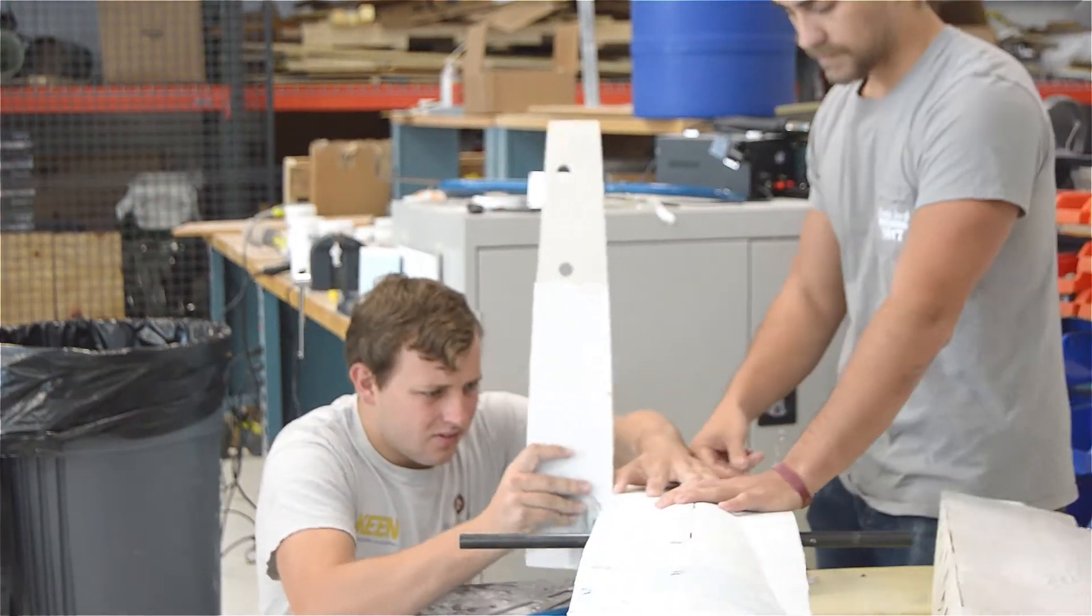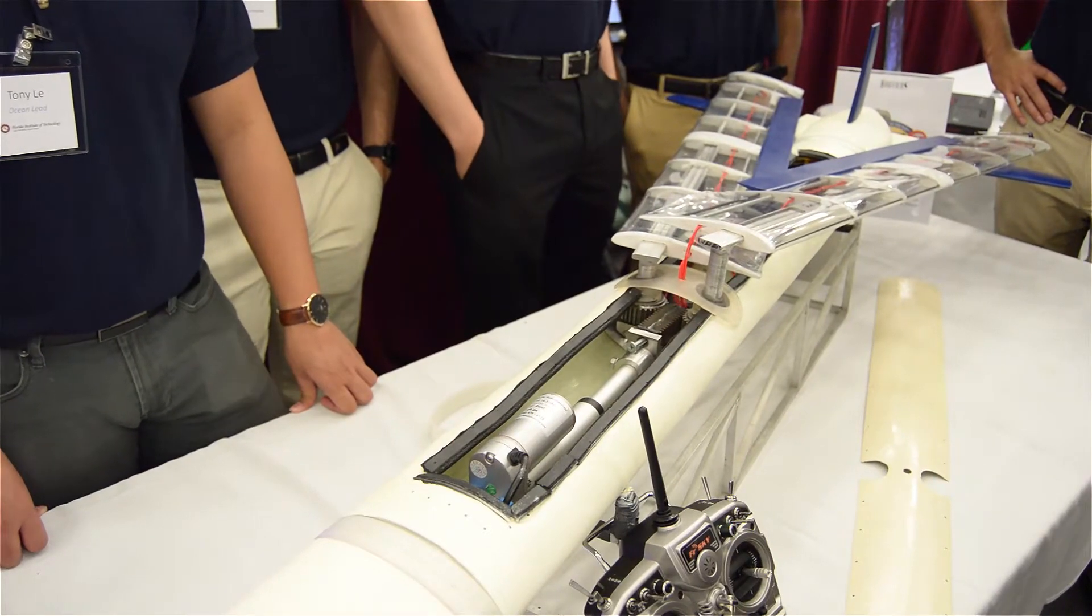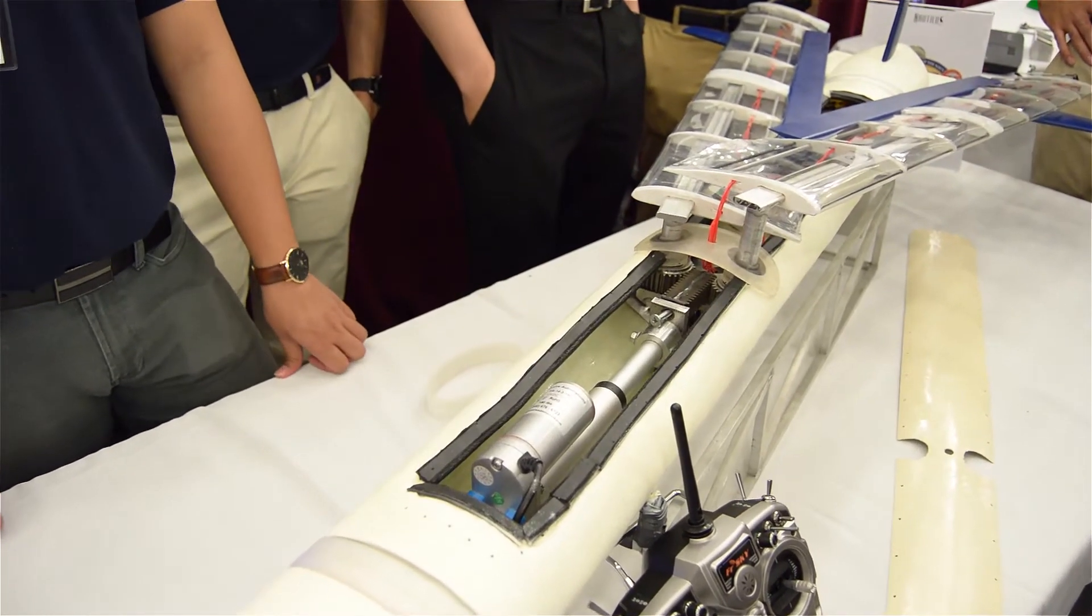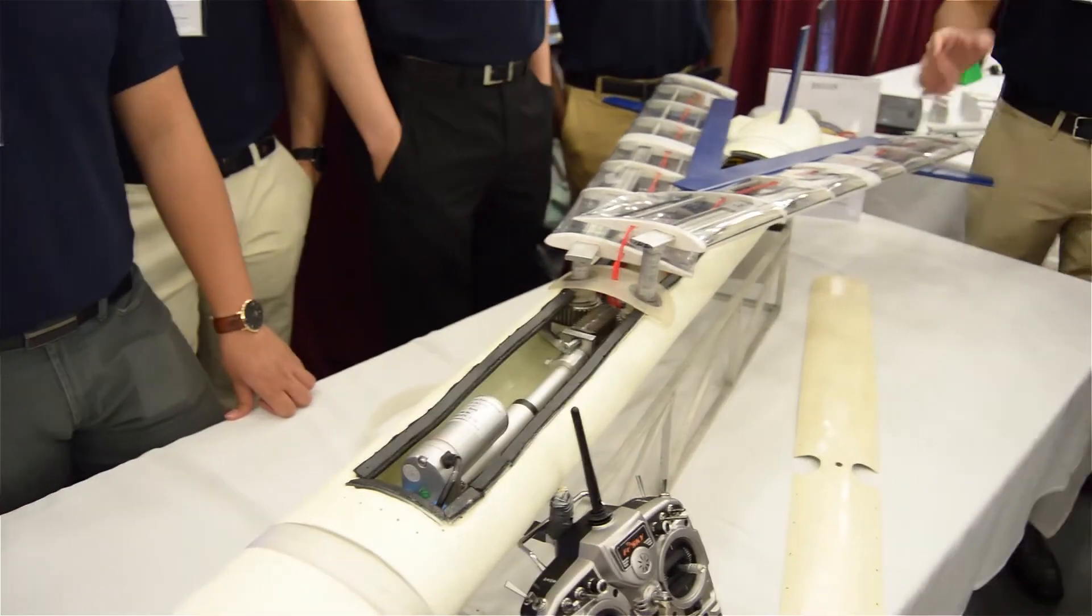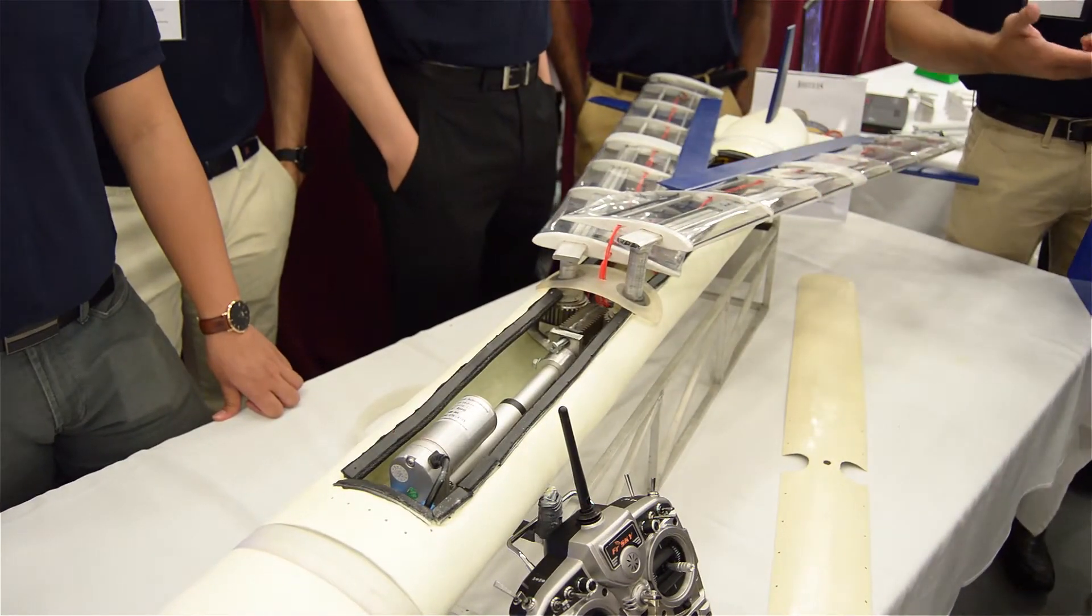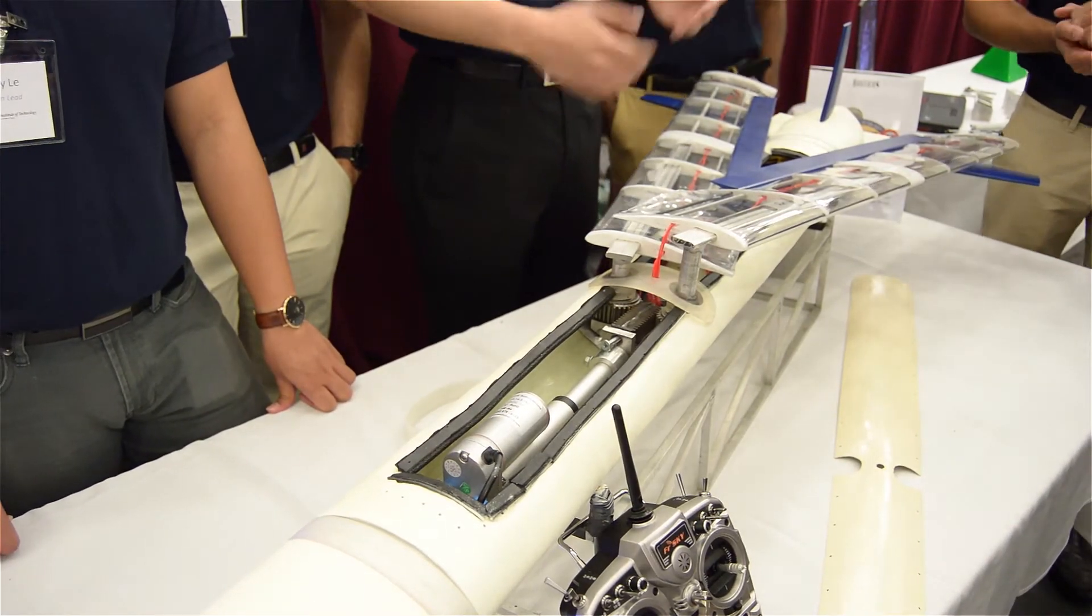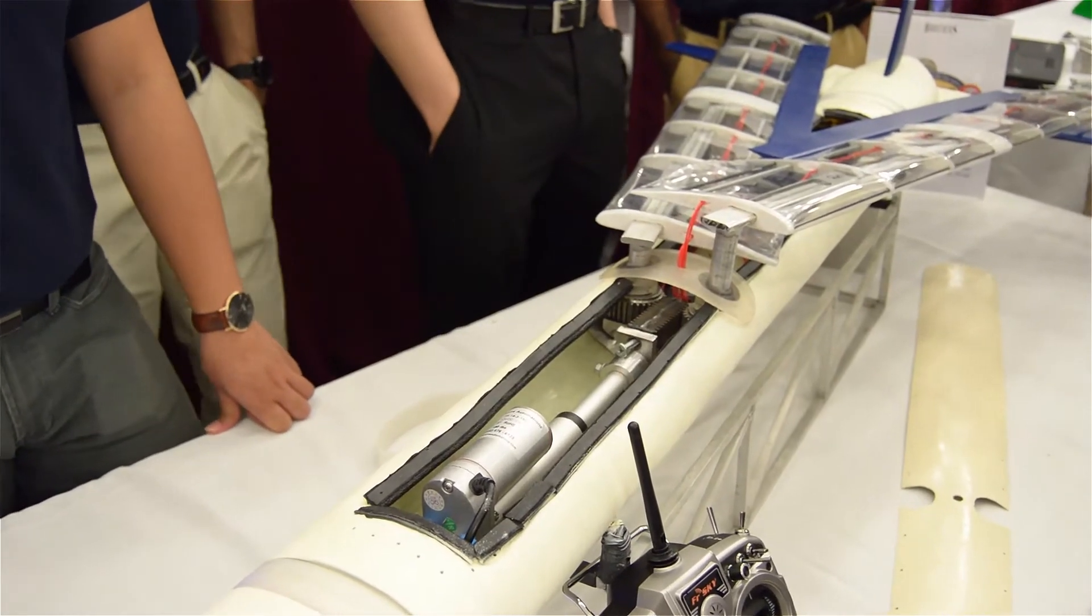We made a complex shape with simple manufacturing techniques. We didn't really use anything complicated. We used a CNC machine to, one, make our mold for the outside of the plane. Two, it helped us cut out our foam core that we used inside the wings and inside the fuselage.